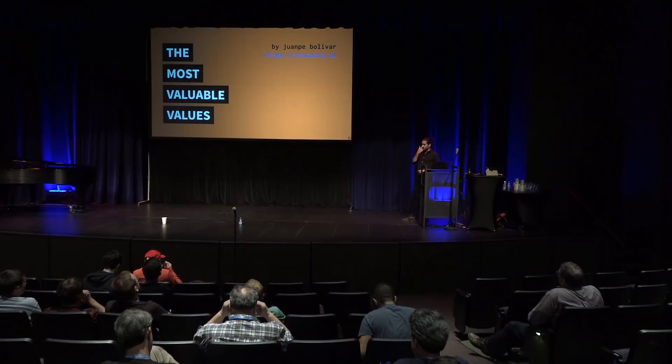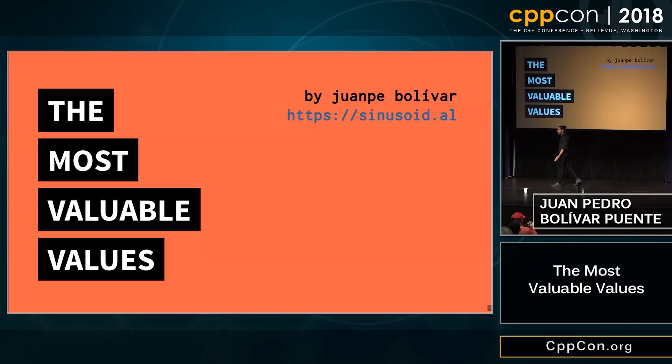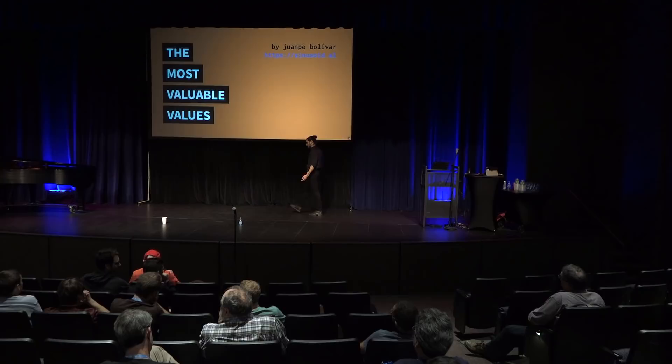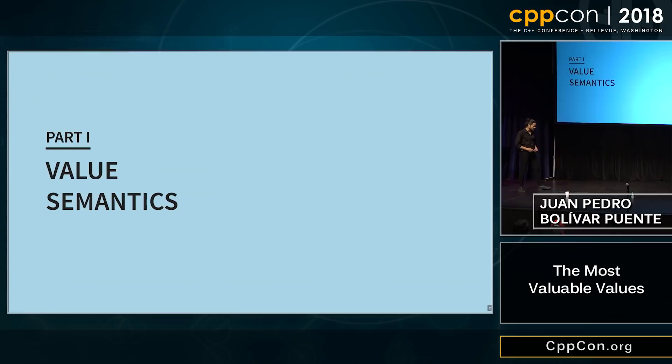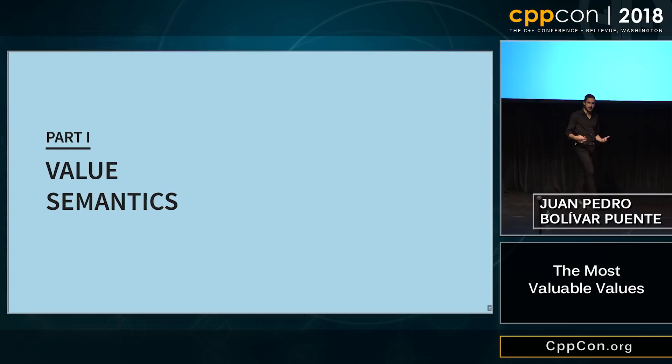Values here not as in ethics or economic value — they could be very interesting topics as well — but of course, as in our favorite topic as C++ programmers, value semantics. And a lot of my work has been preoccupied with making value semantics scale. Last year here I presented a data structure library about immutable data structures — that's basically the point: making value semantics scale.